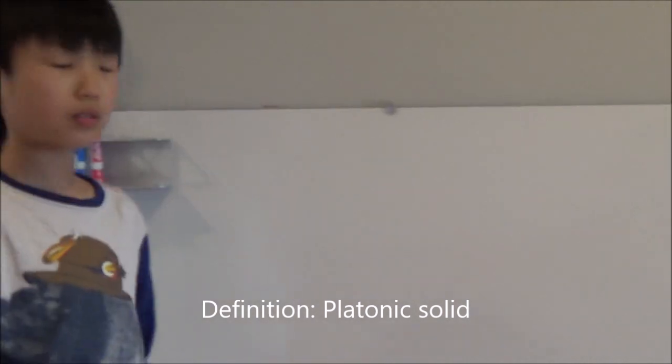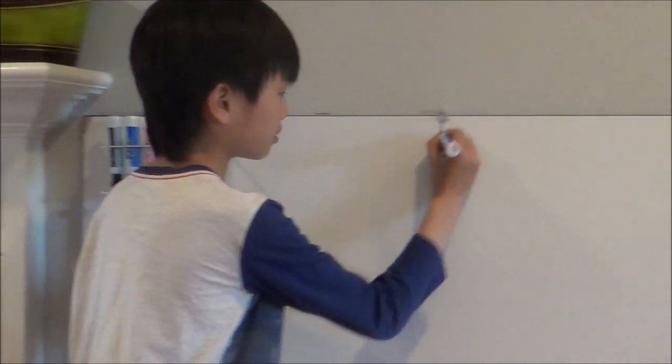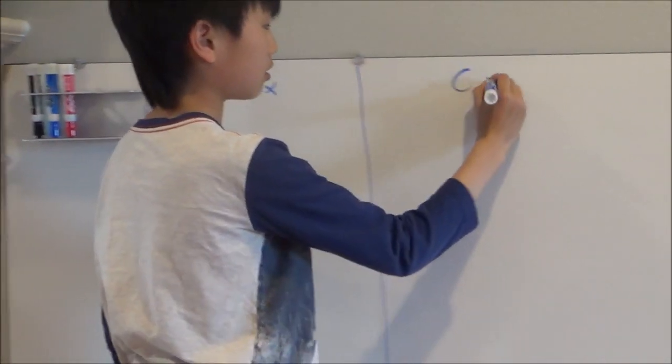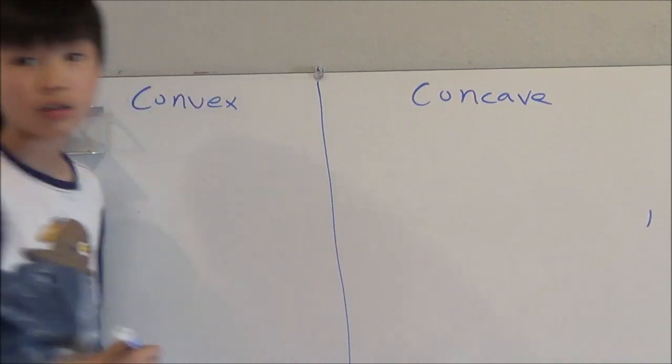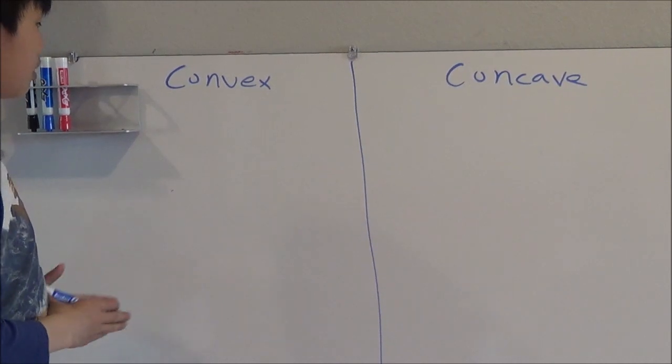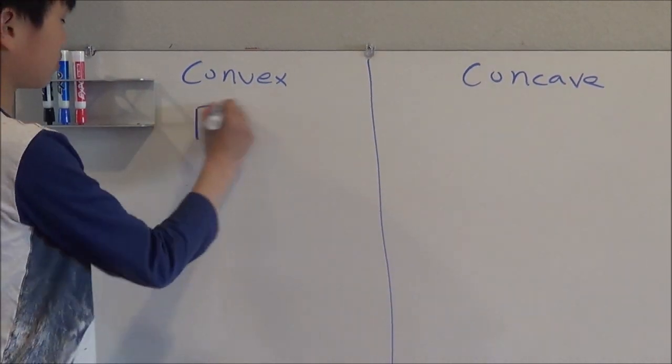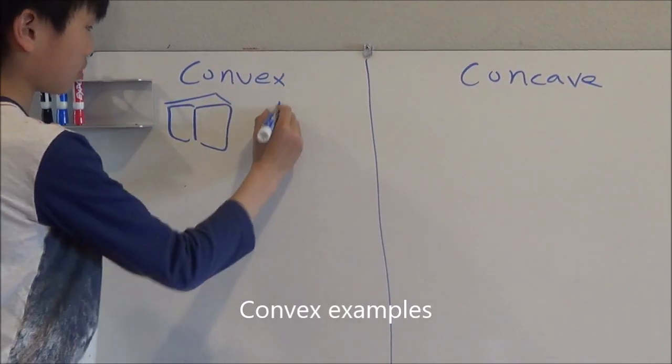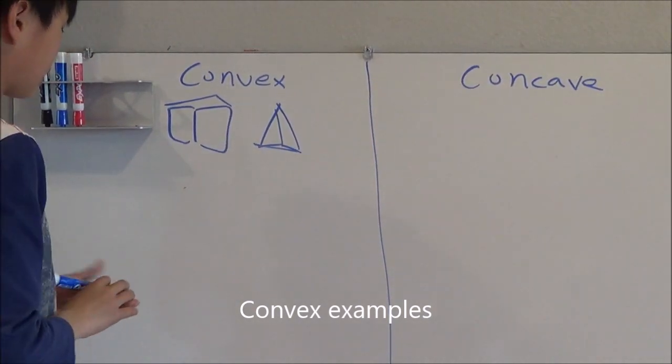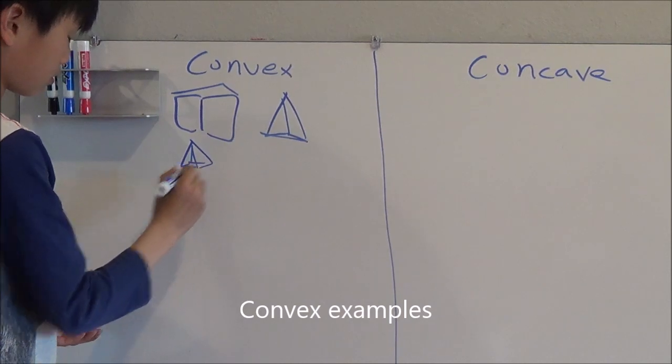Now, these different polyhedrons are split into two categories. There are the convex and the concave polyhedrons. Every polyhedron fits in one of these categories. Convex polyhedrons include the cube, the tetrahedron, and also the pyramid.